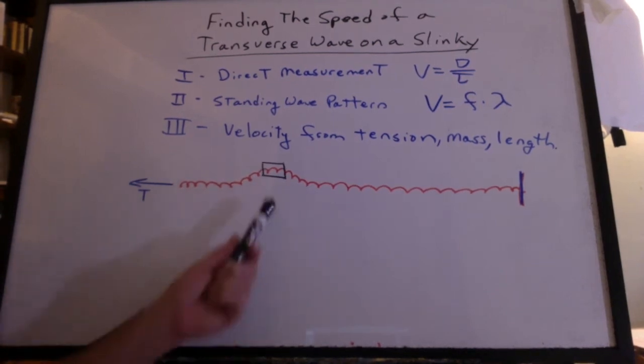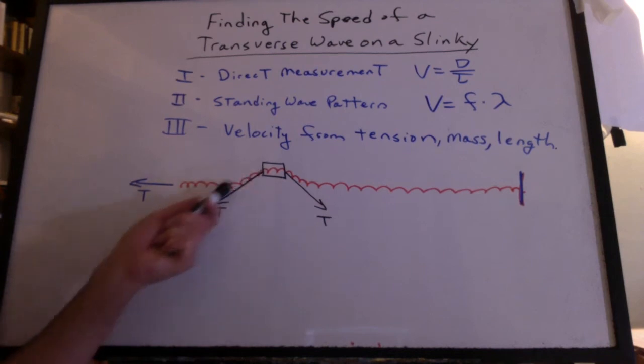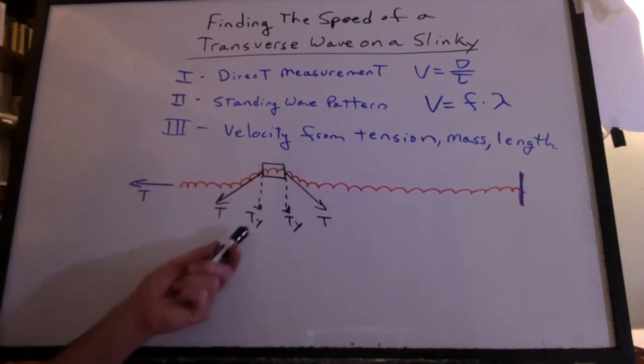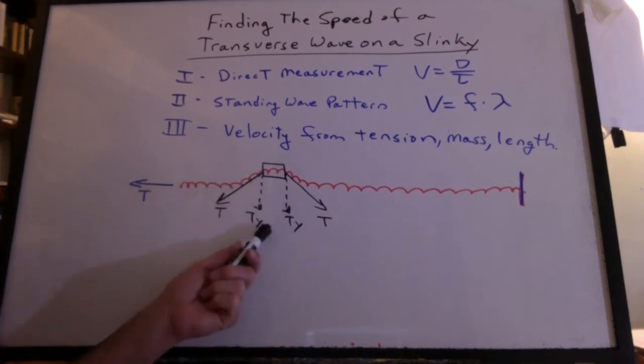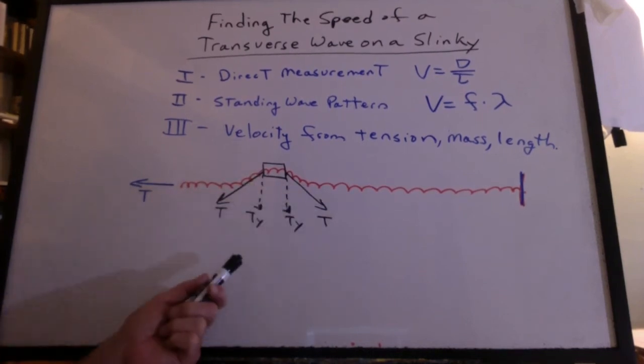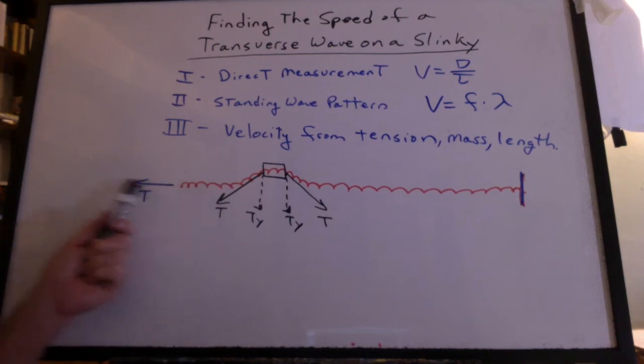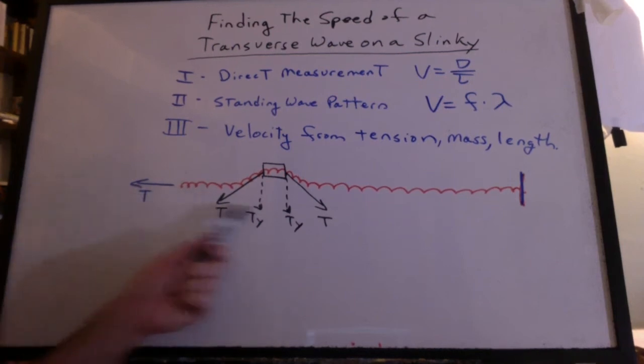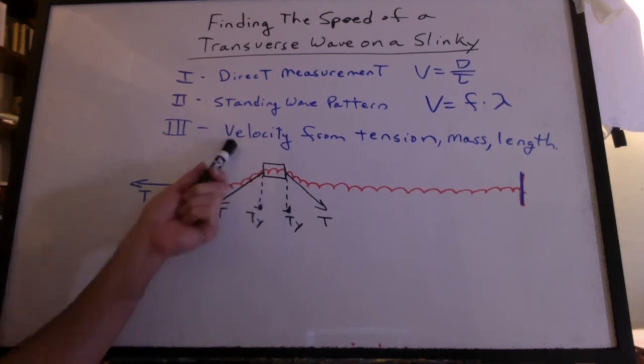Let's take a look at a small portion of the slinky at the very top of the wave. The tension is pulling at an angle. The y components of these tensions are going to snap the wave back to the equilibrium position. That explains the more we stretch out the slinky, the bigger the tension, the quicker it'll snap back, and that's going to increase the velocity.